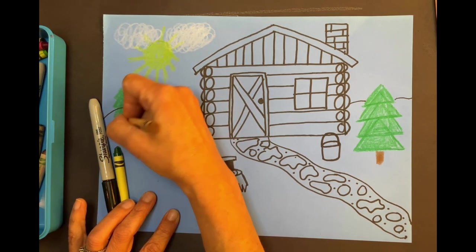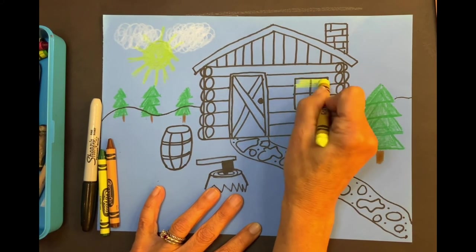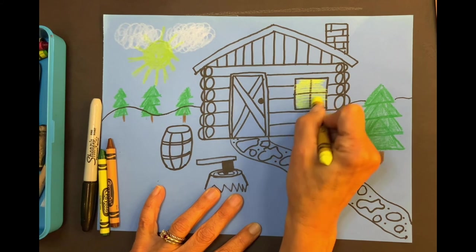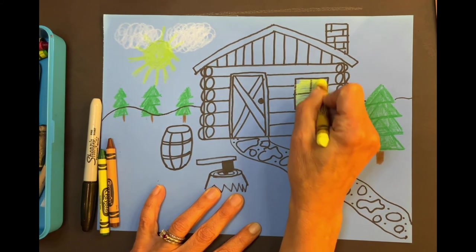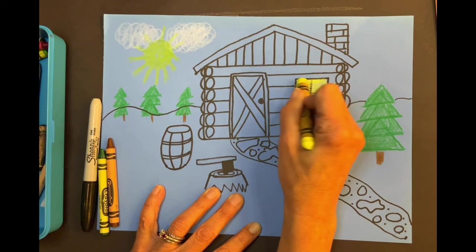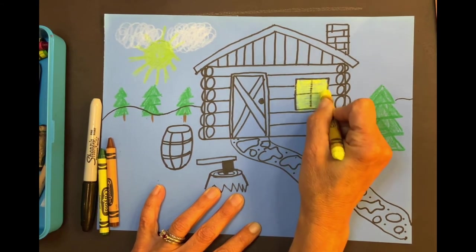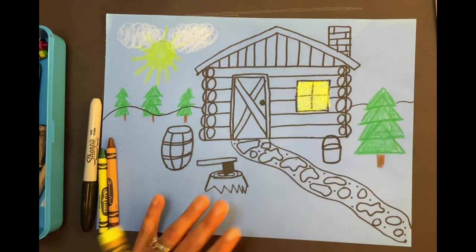Good. Now we need to color this cabin. Let's put the lights on. Let's color the windows yellow like the lights are on inside. Did they have electricity? No.